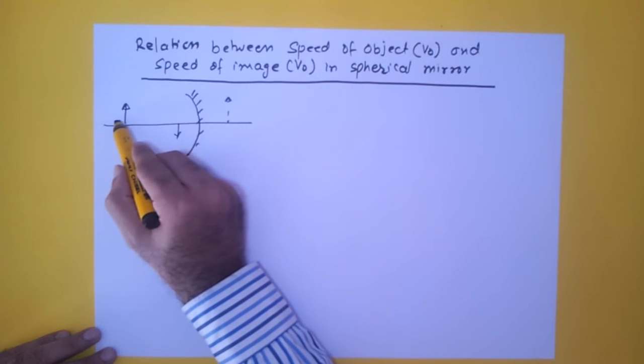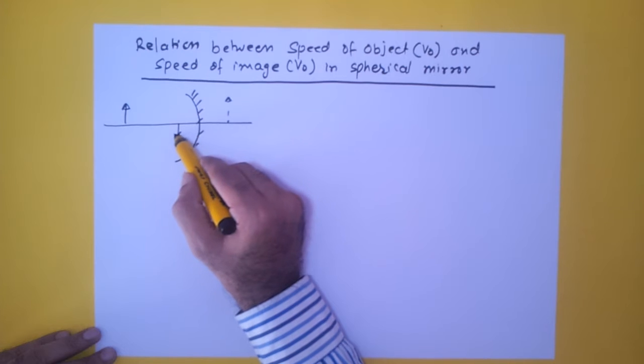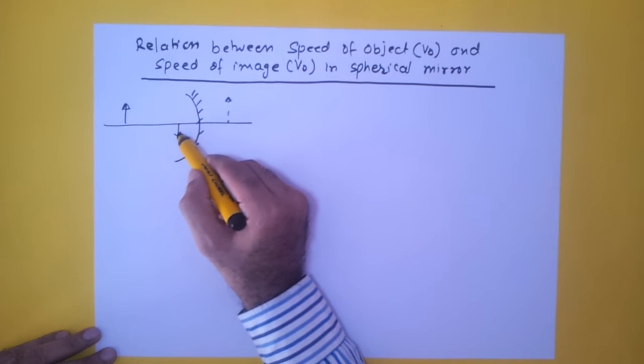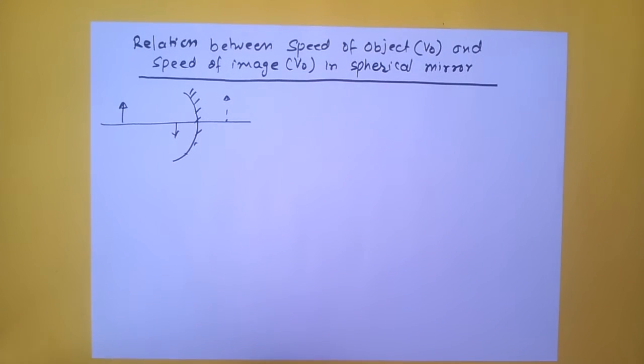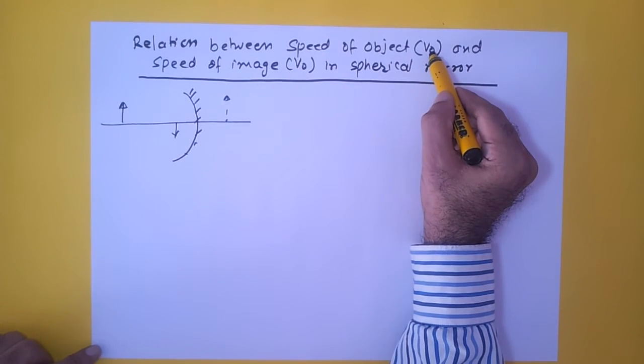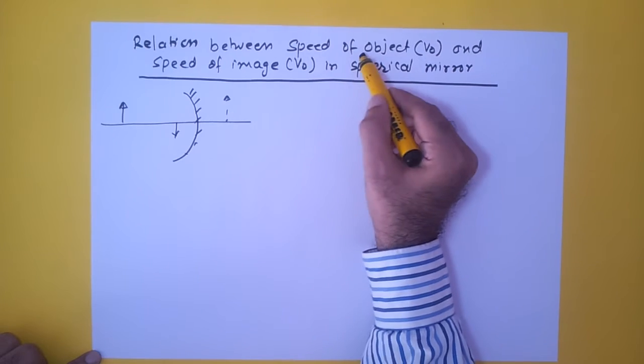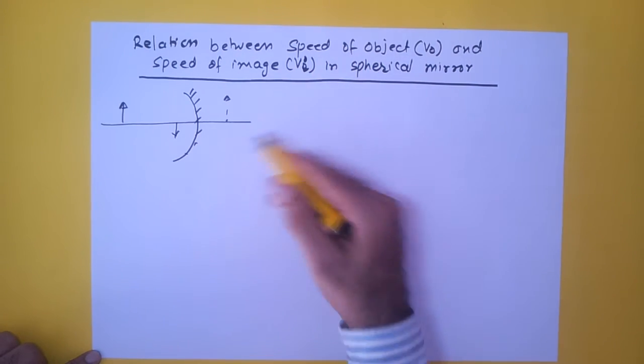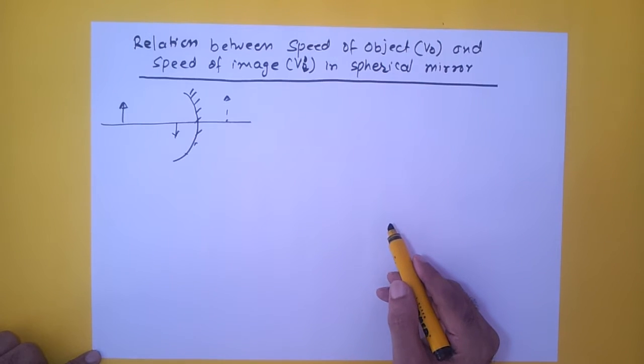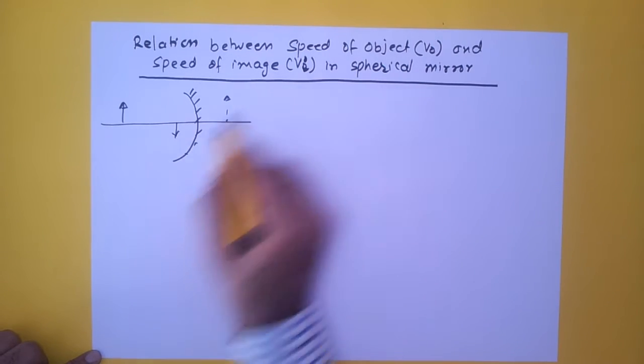Now this object forms sometimes real image and sometimes virtual image. Let's say the object is moving around. How will the image move? What is the speed of the image when the speed of the object is this? So we will try to find a relationship between both of them. V_O represents speed of the object and V_I represents speed of the image. We'll try to find the relationship between these two terms.